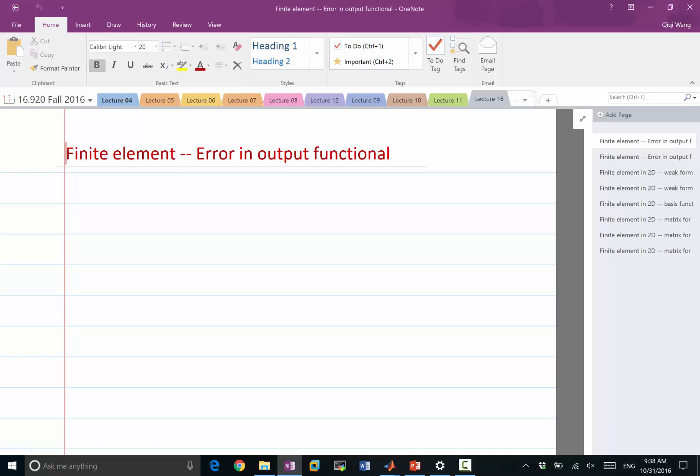So in order to introduce that kind of a posteriori error estimate, the posteriori error estimate cannot be actually applied to the entire solution. It can only be applied to output functionals on the solutions. So what does that mean? It means we have a finite element solution written in a weak form, where u and v is in the solution and test space, infinite dimensional.